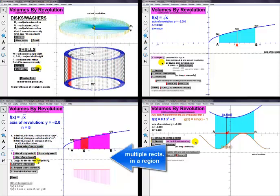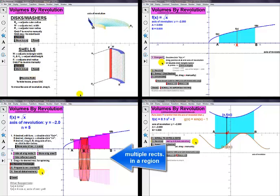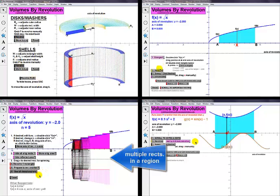On the next page, bound a region from A to B with any function and the x-axis. Choose a finite number of rectangles to revolve around any horizontal axis to approximate the desired volume.